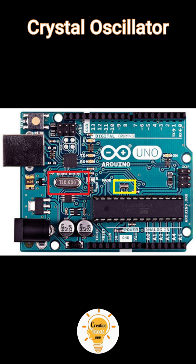Crystal Oscillator: The crystal oscillator helps Arduino in dealing with time issues. How does Arduino calculate time? The answer is by using the crystal oscillator. The number printed on top of the Arduino crystal is 16.000H9H, telling us that the frequency is 16,000,000 Hz.